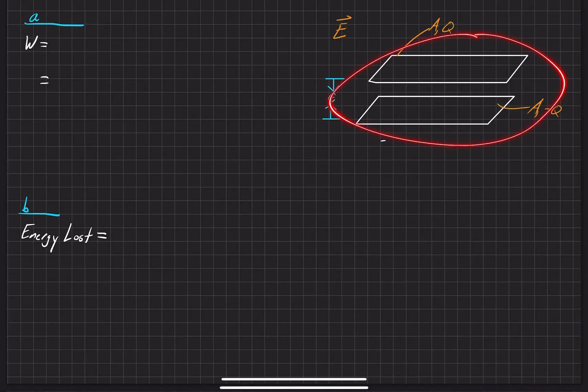In this problem, we have two parallel plates, each with a surface area of A, one of them having a charge of Q, the other one having a charge of negative Q.